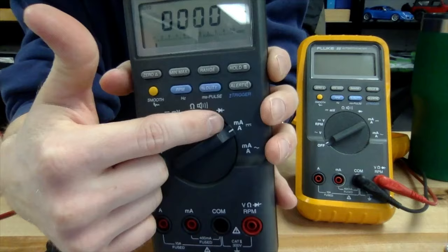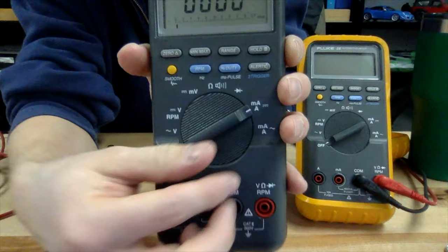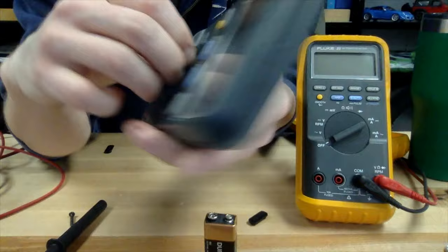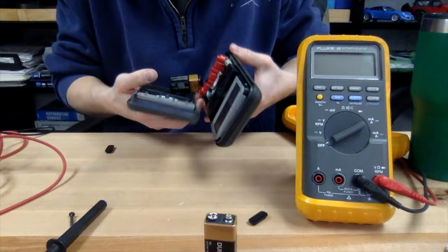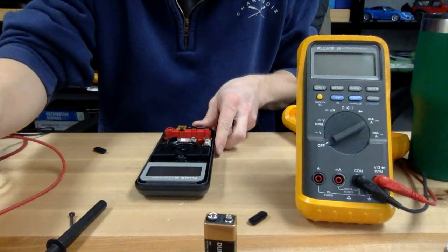Okay, our last problem is when you go to measure current and the multimeter does not register any sort of reading. This multimeter has two fuses inside for when you're measuring current. That's the setting that says A, which is short for amperes, and MA, which is short for milliamps.